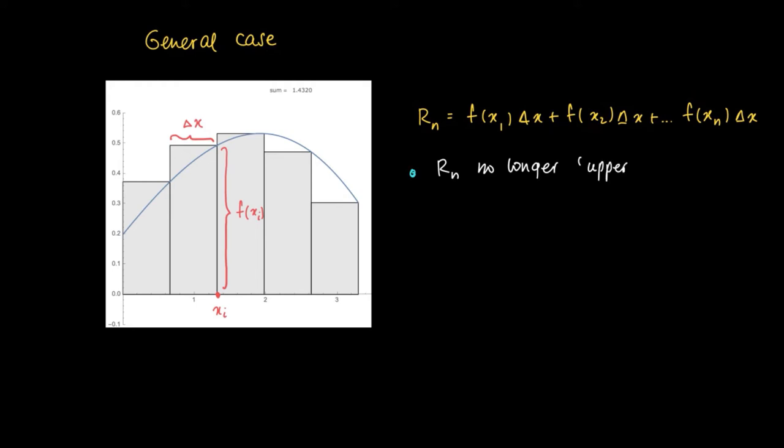Notice that R_n defined for this function here is no longer a so-called upper sum. Parts, depending on the decreasing or increasing parts of the function, we find that the rectangles are above or below the graph of the function. Anyways, if we refine this procedure, so we take smaller and smaller intervals.